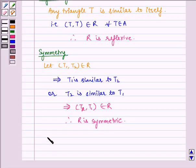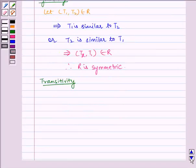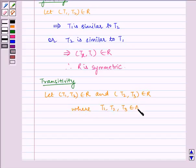Now let us check for transitivity. Let (T1, T2) ∈ R and (T2, T3) ∈ R, where T1, T2, T3 ∈ A.